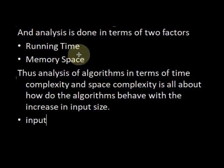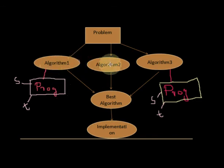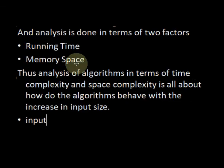Running time is also referred to as time complexity, and memory space is also referred to as space complexity. We will first discuss the time complexity of the algorithm. The key point is that we are not going to actually run the algorithm on a machine to calculate its running time before implementation. By analyzing the algorithm, we should be able to determine what the running time and space requirements will be. To do this, we need to identify the factors affecting time complexity and space complexity.